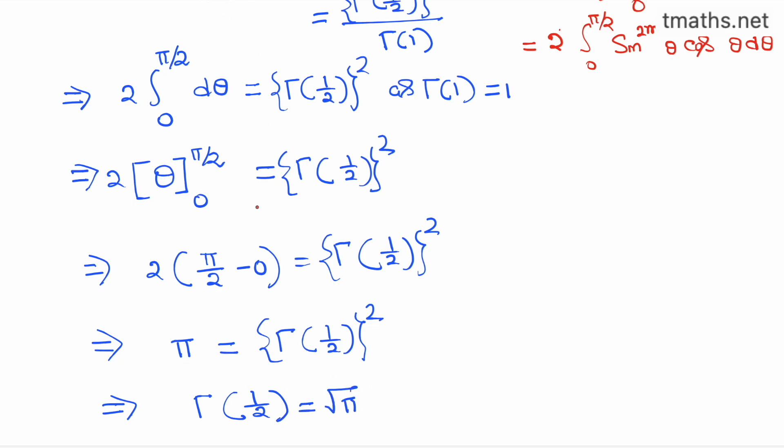Therefore, we finally obtain that the value of gamma half is equal to square root of π, and this is our final answer.